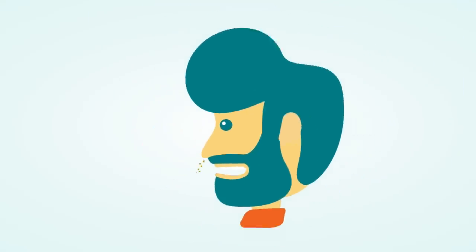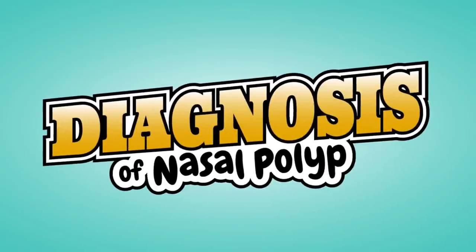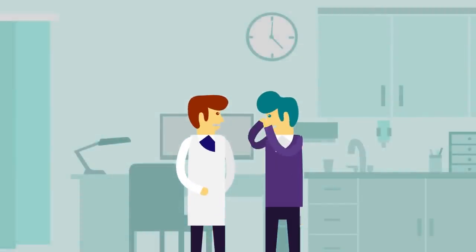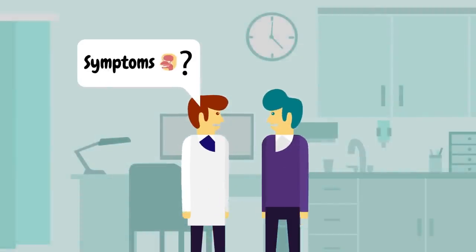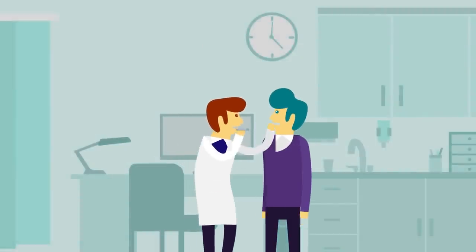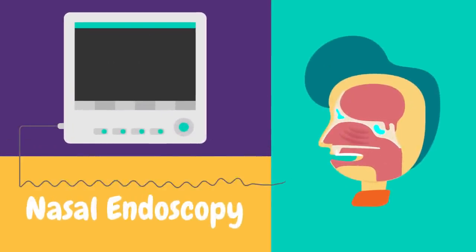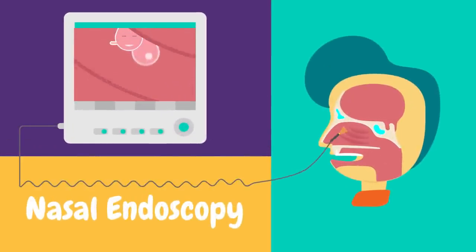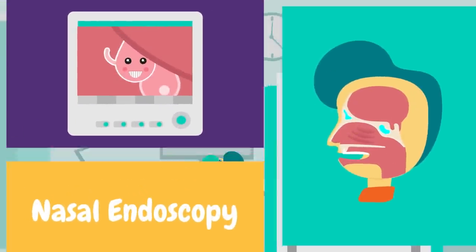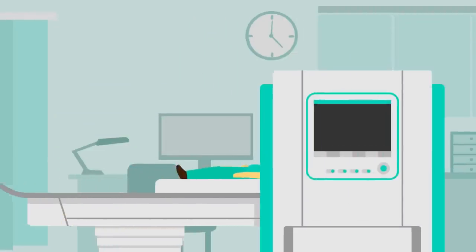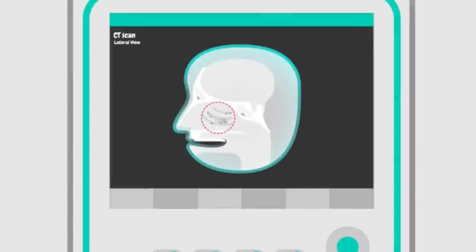Diagnosis of nasal polyps: a doctor will generally make a diagnosis after asking about symptoms and examining the patient's nose. Further tests include: 1. Nasal endoscopy — a narrow tube with a small camera is inserted into the patient's nose. 2. CT scan — this enables the doctor to locate nasal polyps, identify other abnormalities linked to chronic inflammation, and identify other obstructions.